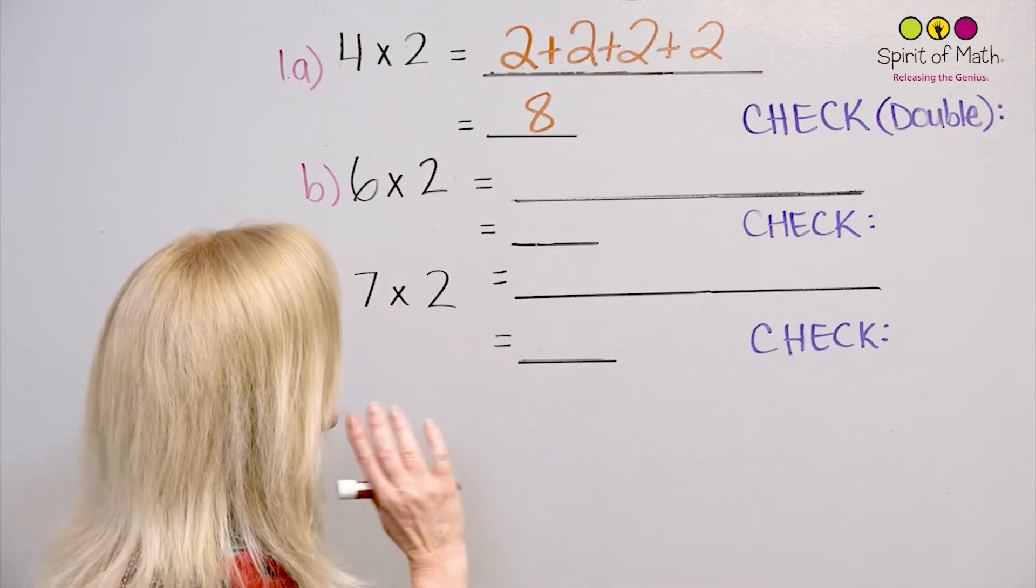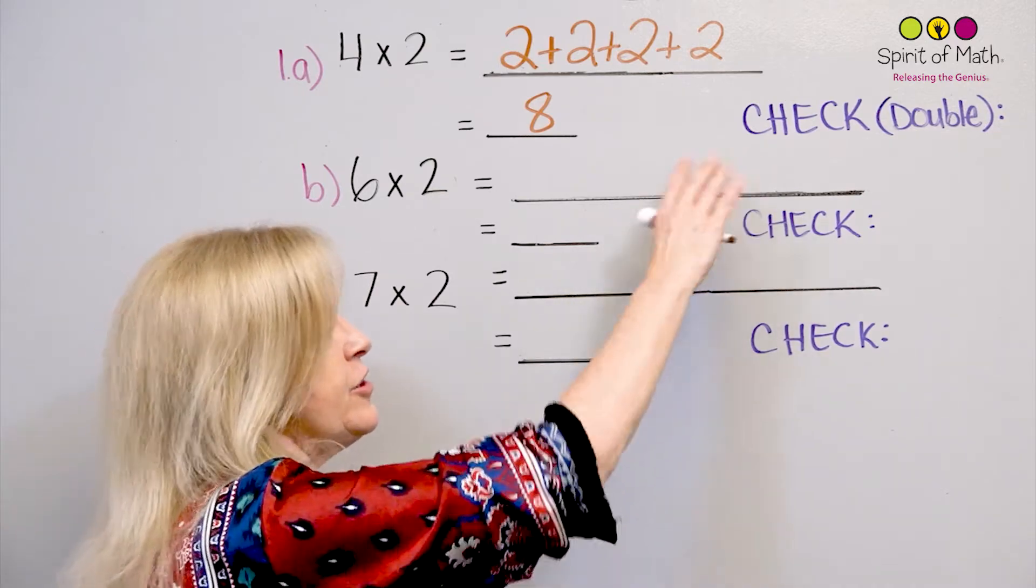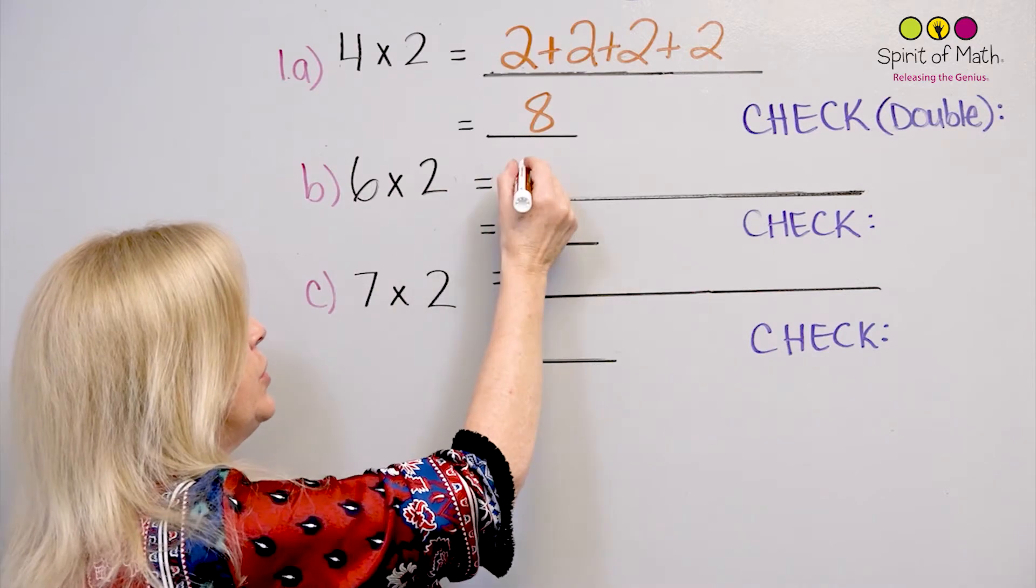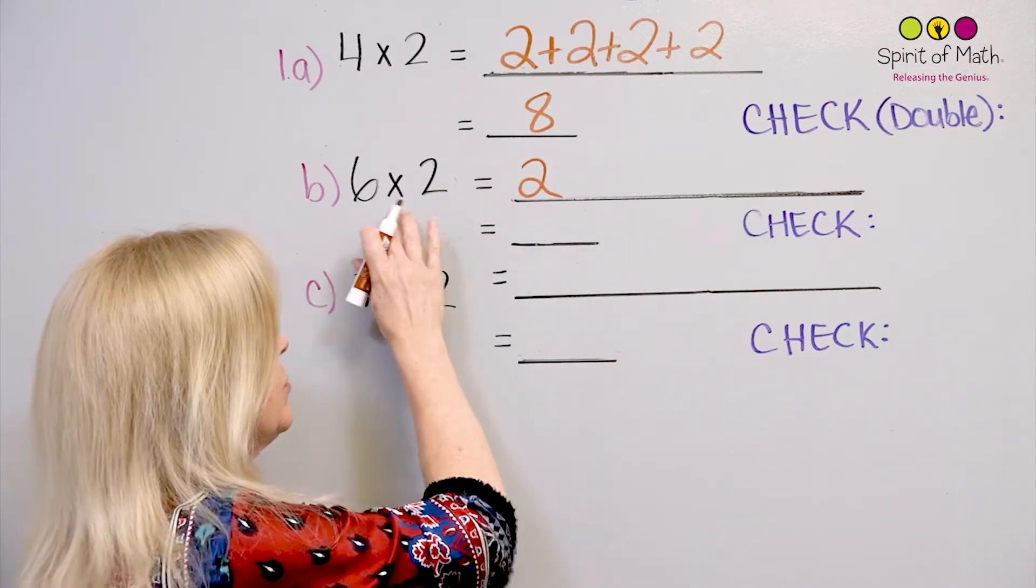Now, I'm going to come back to this check in a minute. Let's just carry on with these, and then I'm going to show you a neat little way to check this. In this case, it's 6 groups of 2. So you need to count 2, do 2, 6 times, 6 groups of 2.